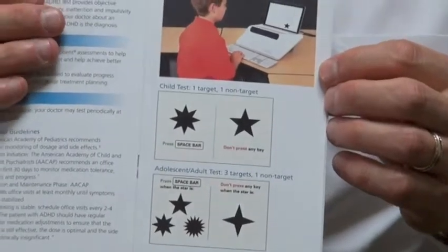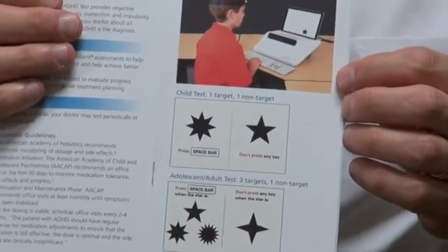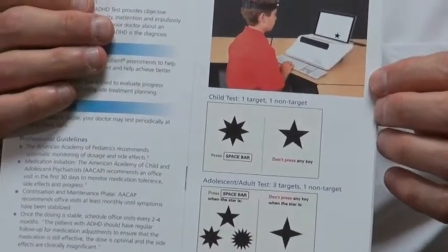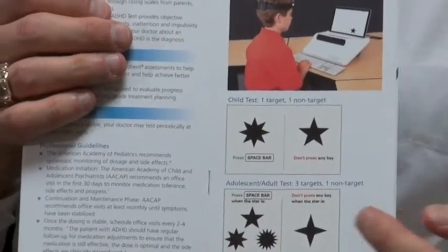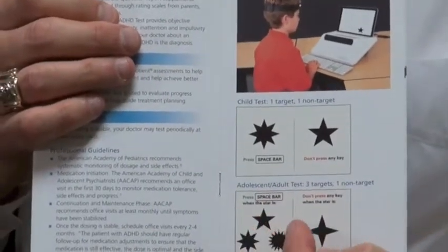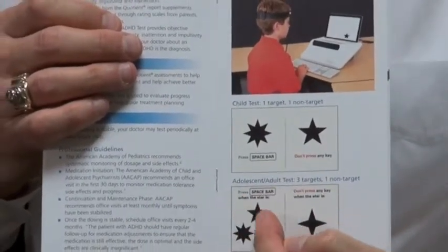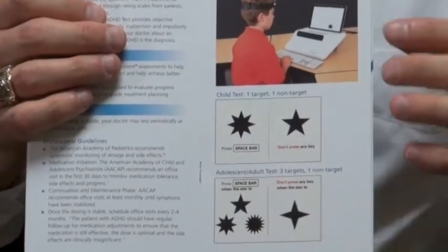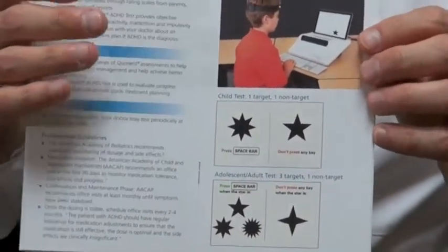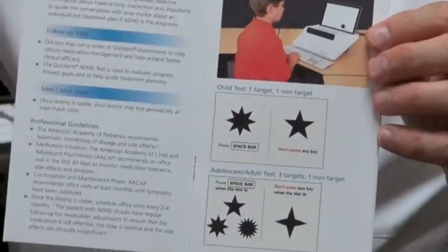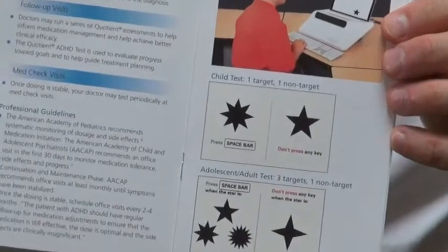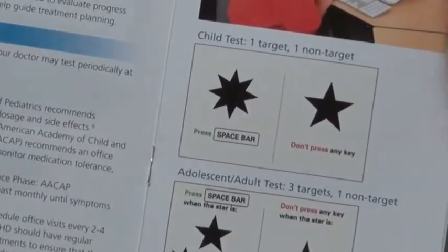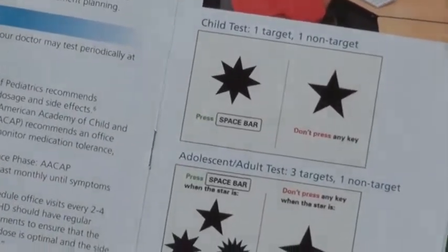On the screen, for a child defined as 6 to 12 years of age, there's a good target and a bad target. If you see the six-pointed star, you hit the space bar; if you see the five-pointed star, you don't. That test takes 15 minutes. For adults, it's more challenging — there are three different star targets and one four-pointed non-target. The rule is: hit the space bar for targets, don't hit it for the non-target.